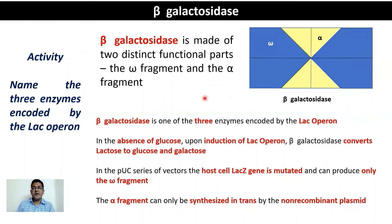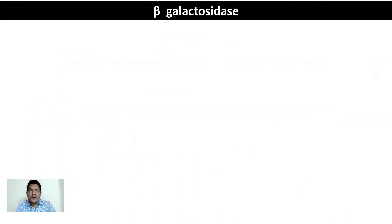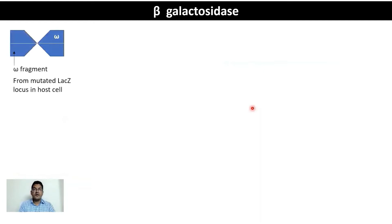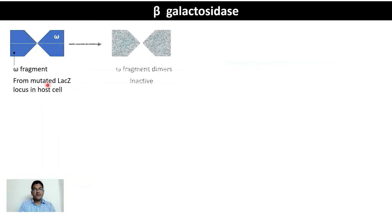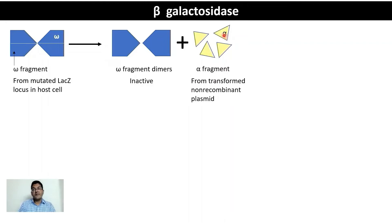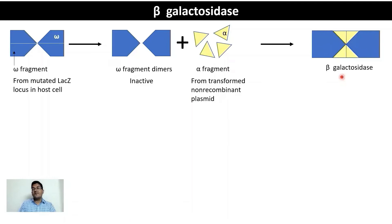The alpha fragment can only be synthesized in trans by the non-recombinant plasmid — this is the strategy to identify recombinants from non-recombinants. In a mutated host cell, the omega fragment dimers are inactive. However, if the alpha fragment is provided by the plasmid sequence, a functional beta-galactosidase can form and break down lactose to glucose and galactose, providing energy for the cell.